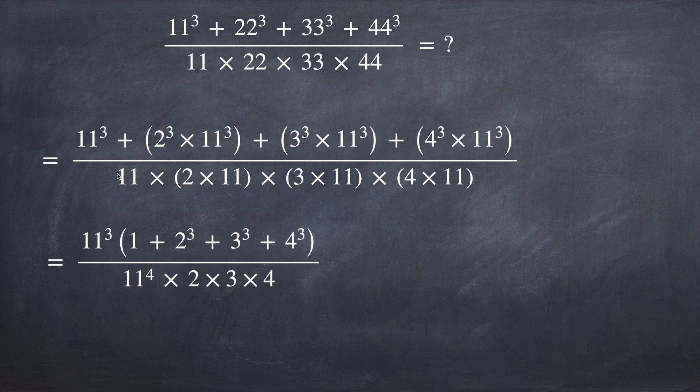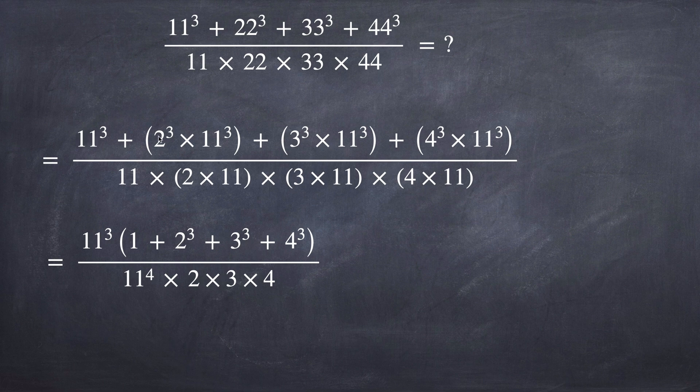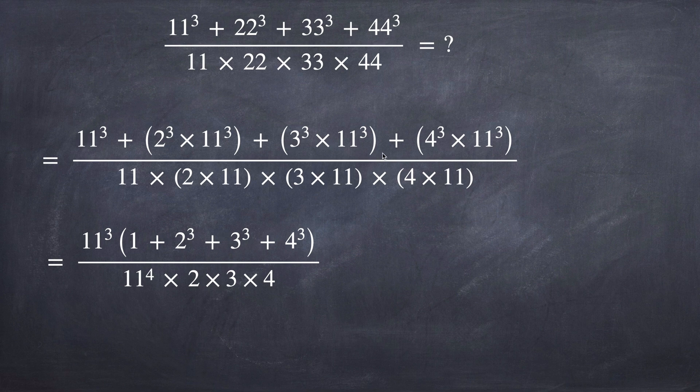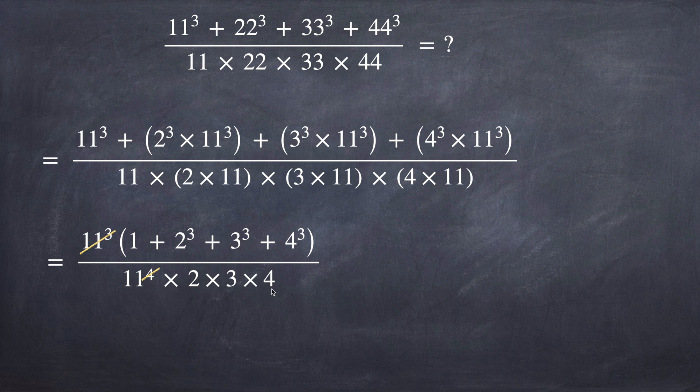Now in the numerator, let's factorize 11 to the power of 3, which multiplies 1 plus 2 to the power of 3 plus 3 to the power of 3 plus 4 to the power of 3. In the denominator we get 11 to the power of 4 times 2 times 3 times 4. Now we will cancel out 11 to the power of 3 in the numerator and in the denominator, remaining 11 times 2 times 3 times 4.